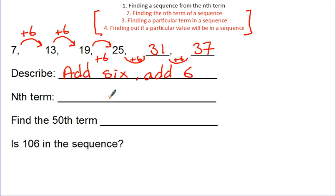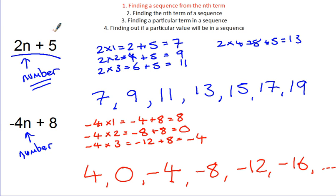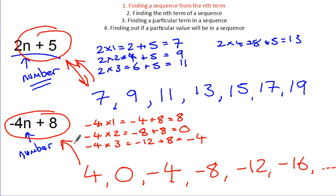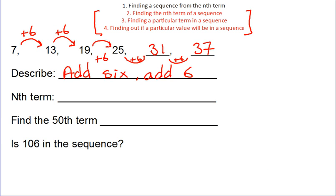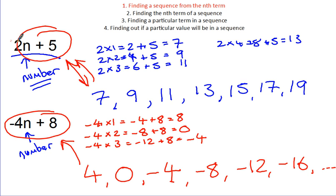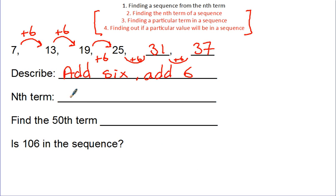They then might ask you to find the nth term. Now, the nth term means we're going back to this formula. So, we've now got the sequence and we're going in this direction. So, we're going from the sequence to the nth term. So, as you can see from before, when we had 2n as the start of our sequence, we went up in twos. When we had minus 4 at the beginning of the nth term, we were going down in fours. So, the number in front of the n represents the difference in the sequence. So, if it's going up in sixes, I can write down 6n. And if you think about substituting in our numbers 1, 2, 3, 4, 5, 6, this would just give us the 6 times table.